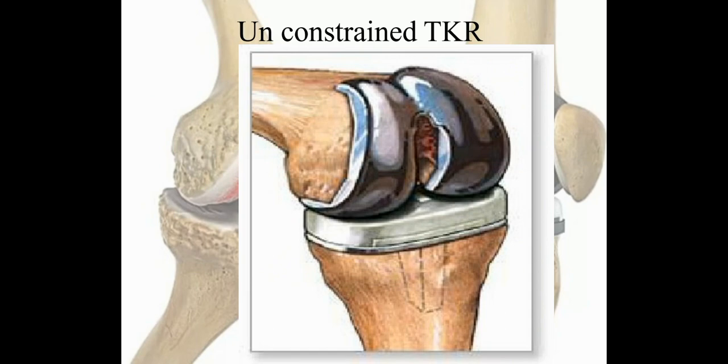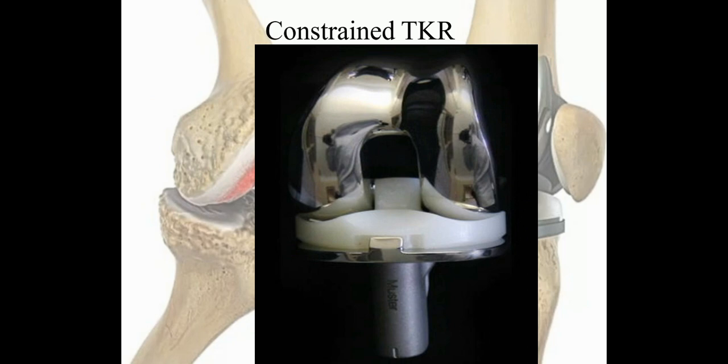This picture shows the unconstrained TKR design, which has no inherent stability in the implant and is used primarily with unicompartmental arthroplasty. The constrained type of TKR prosthesis has significant congruency between the femoral and tibial components with most inherent stability, but provides considerable limitation in the range of motion.